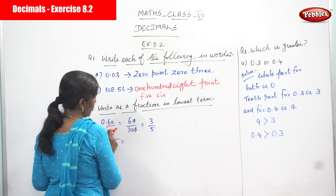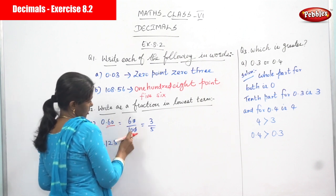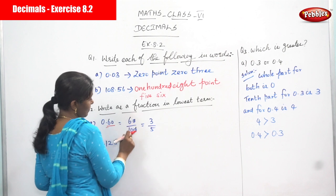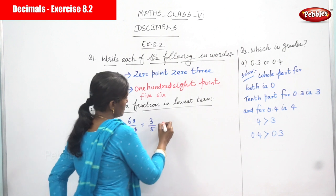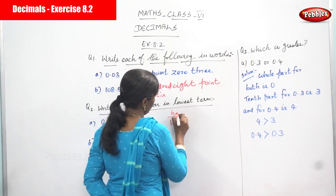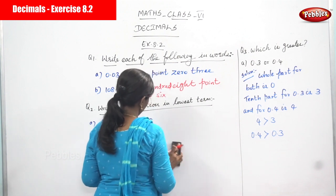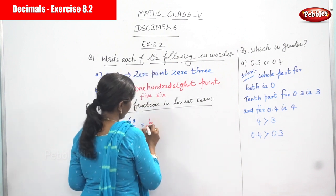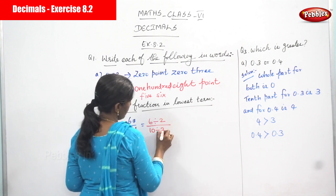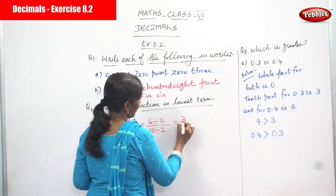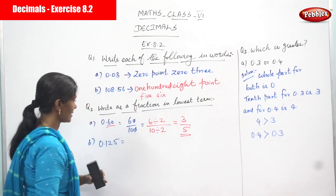This is the fraction of decimal 0.60. First you convert this decimal as a fraction: 0.60 becomes 60 by 100. Cancel both zeros — you get 6 by 10. Then 6 divided by 2 gives 3, and 10 divided by 2 gives 5. So the answer is 3 by 5.